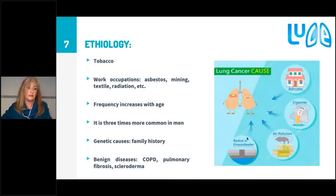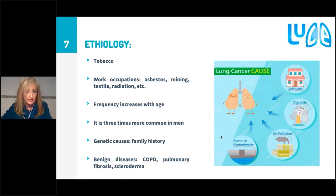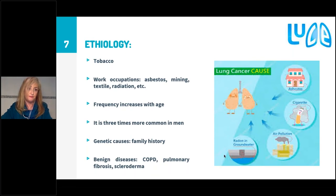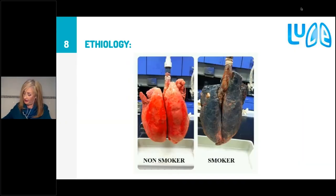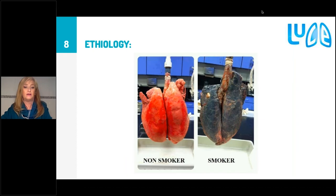Tobacco is the primary risk factor in lung cancer, but there are others, including occupational exposure to asbestos, textiles, or radiation. Frequency increases with age, it is more common in men, and there are also genetic causes — families with a history of lung cancer and other lung diseases have a relationship with it. An image is worth more than a thousand words: you can see here a healthy lung on the left and a smoker's lung on the right — very different.